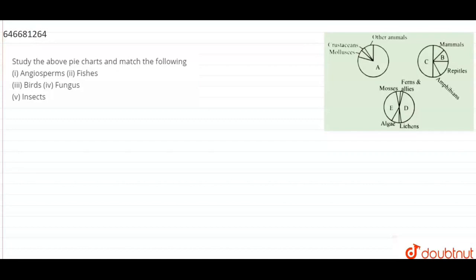So we can see in the first chart, the first pie chart is showing different types of invertebrates. And we have to find what is A. So this column shows other mammals.